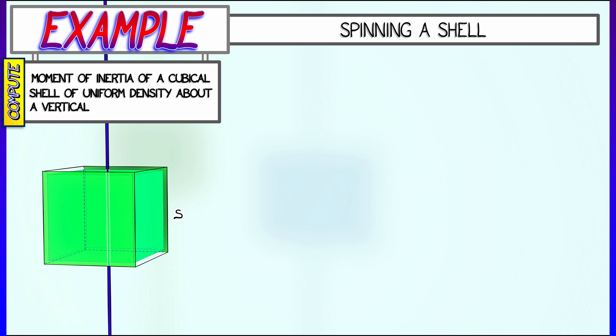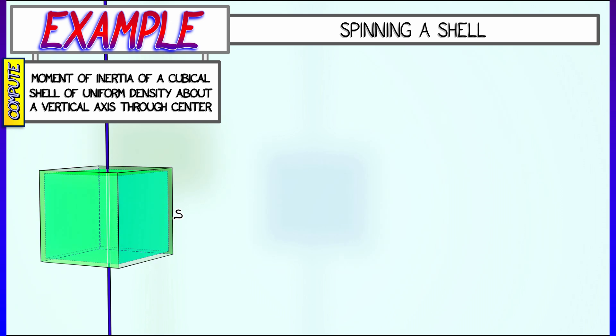In this case, consider a cubical shell - think of a cube where the boundary faces are made of metal or something like that, really thin, and let's rotate that about a vertical axis.